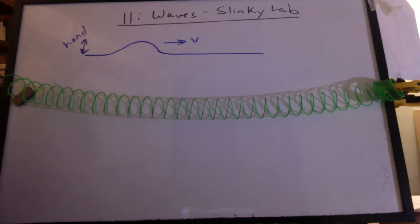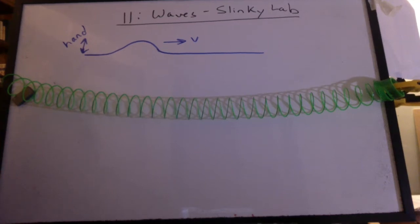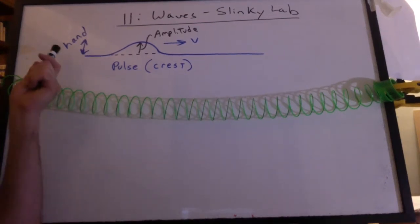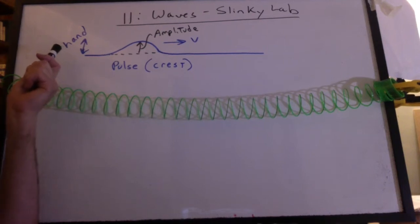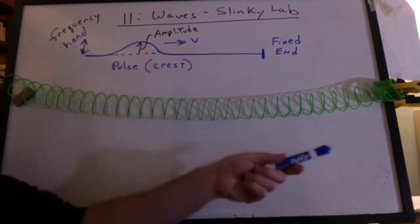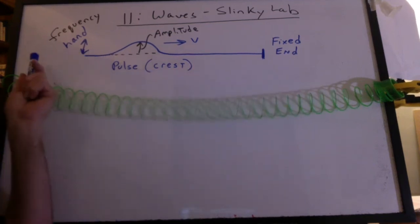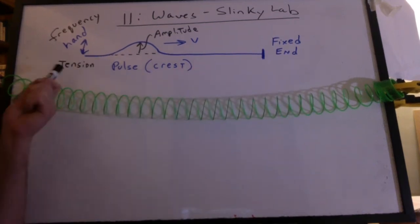Let's say I give my hand a quick flick of the wrist and create a pulse. The pulse moves down the slinky. It's not a full wave, just a crest. The height of that crest is called the amplitude. How quickly I shake my hand up and down, that's the frequency. We're holding this end of the slinky fixed, and then we have to pull the slinky back and apply tension.